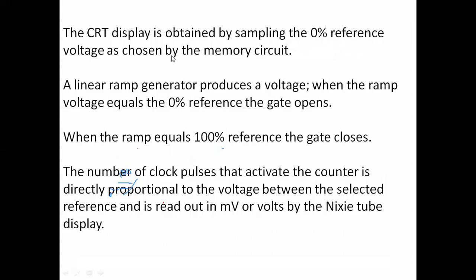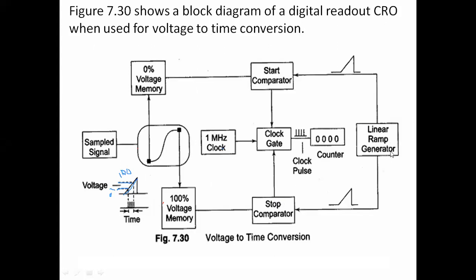The linear ramp generator produces the voltage. When the ramp voltage equals the 0% reference, the gate opens. The start comparator produces a signal that opens the clock gate, and the 1 MHz clock pulses pass through and are counted by the counter. Next, when the ramp voltage equals the 100% voltage — the maximum position for our sample time — that voltage is sent to the stop comparator. When these two are equal, the stop comparator produces the stop signal, closing the clock gate.